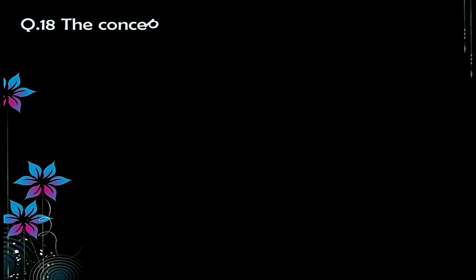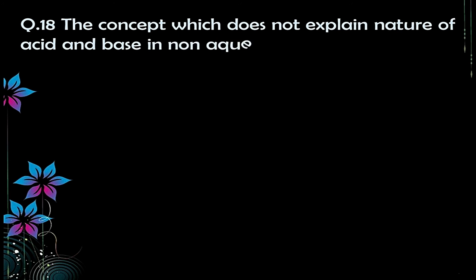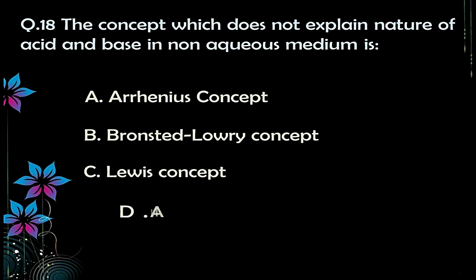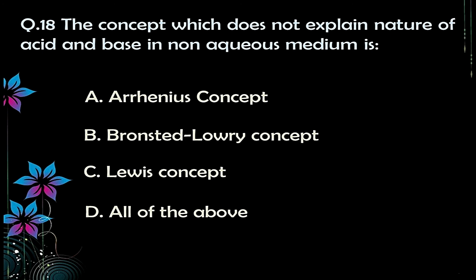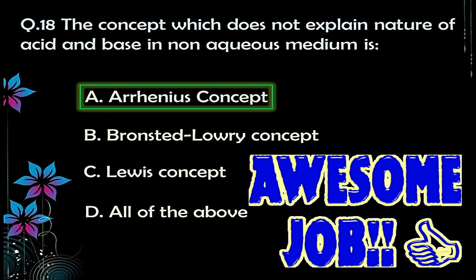Question number eighteen: the concept which does not explain the nature of acid and base in non-aqueous medium is — A) Arrhenius concept, B) Brønsted-Lowry concept, C) Lewis concept, D) all of the above. The correct answer is option A — Arrhenius concept — because the Arrhenius concept is based on ionization of acids and bases in aqueous medium only.